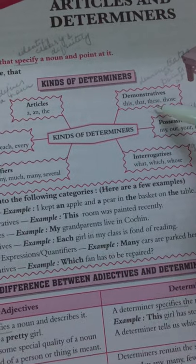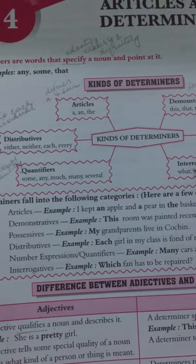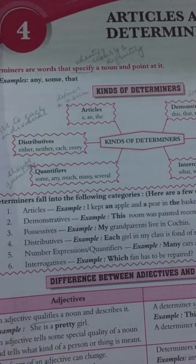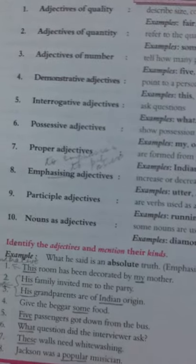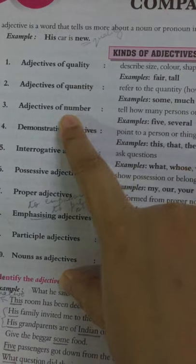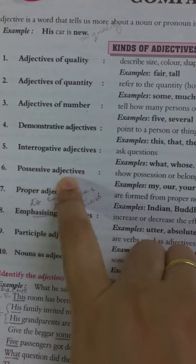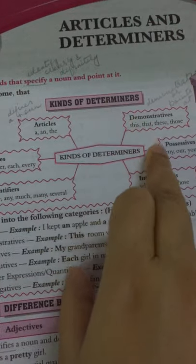I have already discussed demonstratives, possessives, and interrogatives as distributive adjectives in the previous chapter. If we go back to page number 16, you will find demonstrative adjectives, interrogative adjectives, and possessive adjectives. The meaning is the same, but we will go into these kinds of determiners in detail further in the chapter.